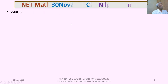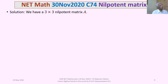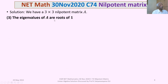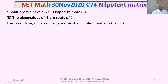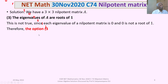For option 3: the eigenvalues of A are the roots of unity. This is not true, because each eigenvalue of a nilpotent matrix is 0, and 0 is certainly not a root of unity. Therefore option 3 is not true.